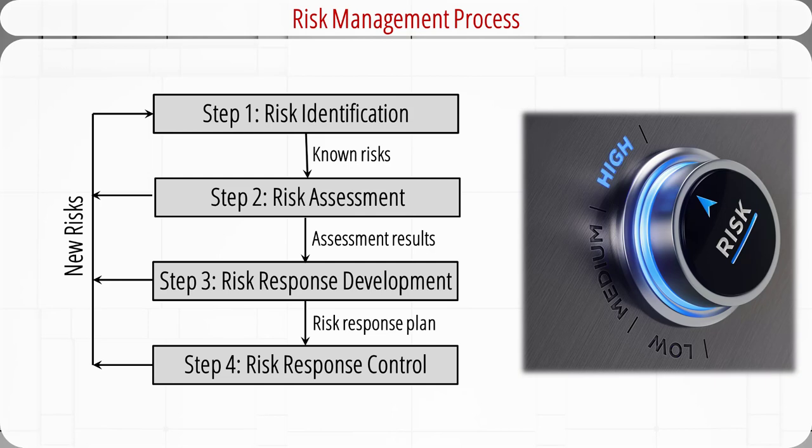The risk management process includes four different steps. Step 1 is risk identification — analyzing the project to identify sources of risks. After a list of known risks are identified, we go to step 2, risk assessment, where we assess risks in terms of the severity of impact, likelihood of occurring, and controllability. The assessment results will be used in step 3 to develop a risk response plan. The risk response plan will be executed in step 4 when risk events occur, and it will be adjusted for new risks. We will introduce these steps in sequence.